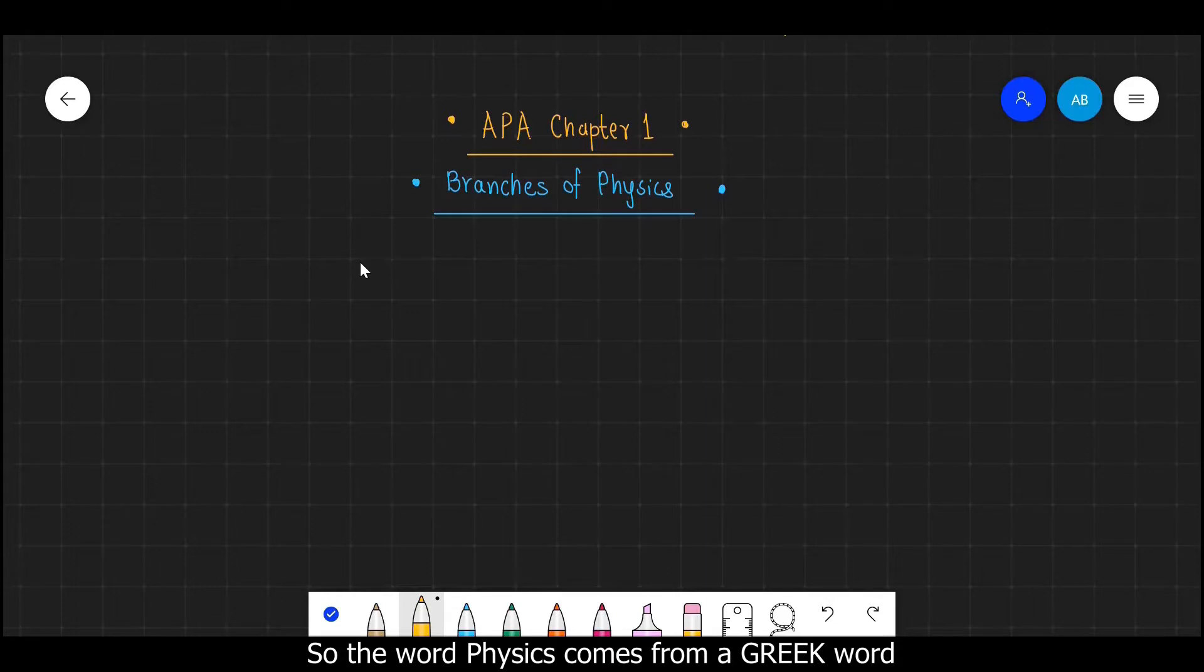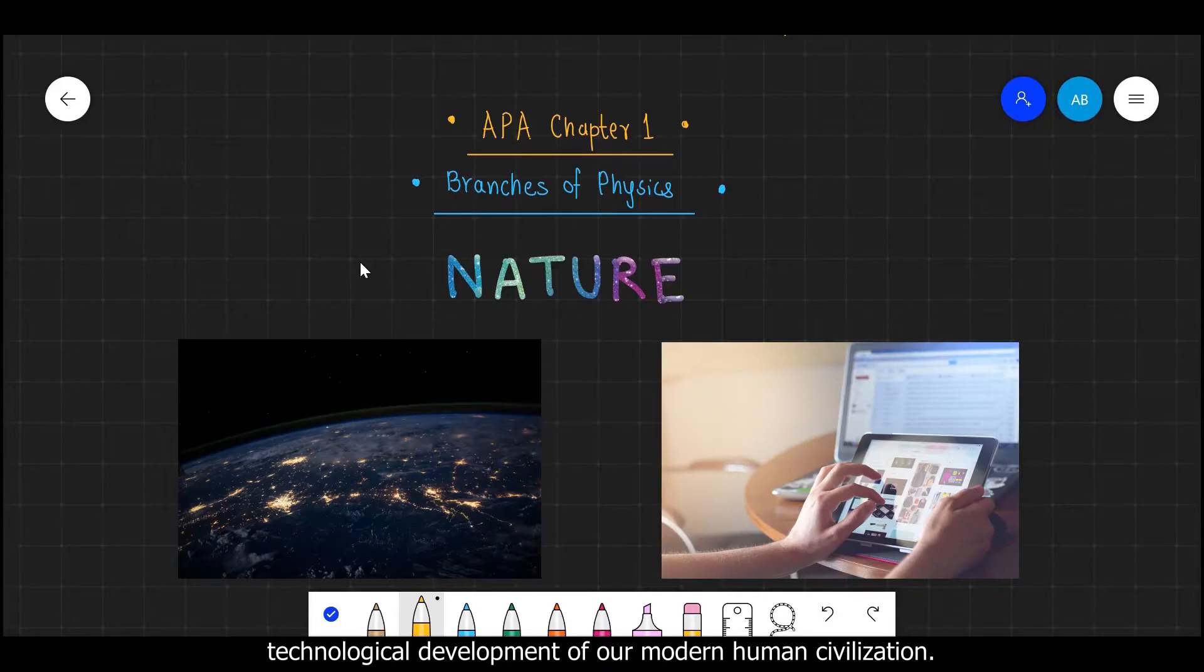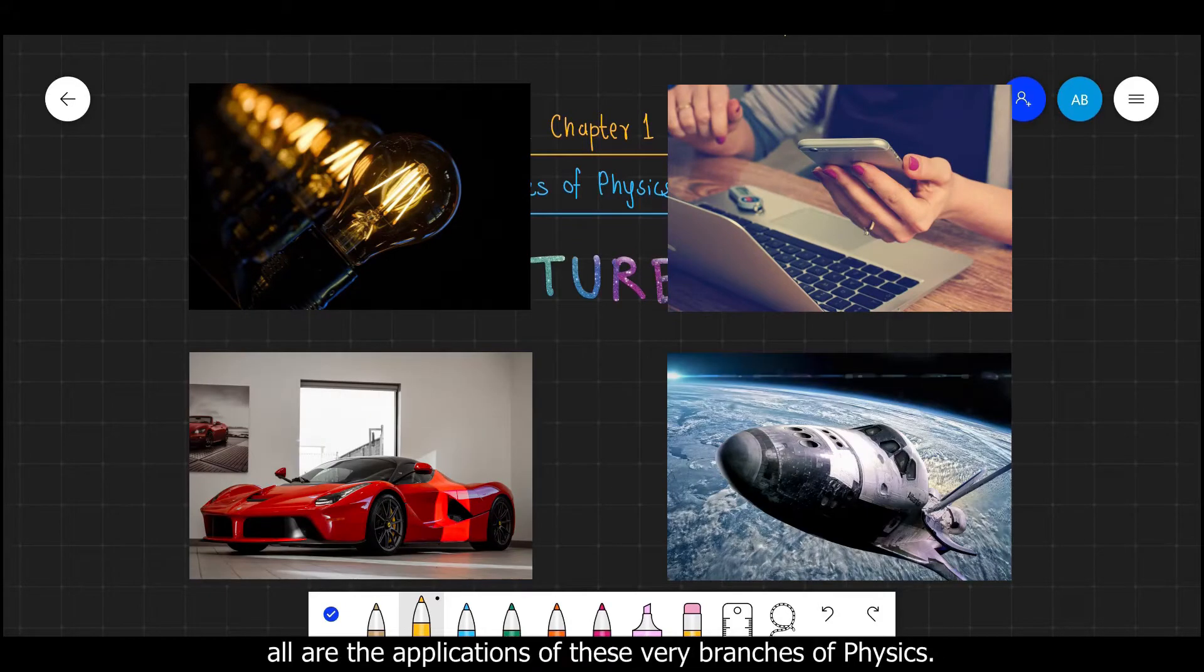The word physics comes from a Greek word which means nature, and indeed physics is all about understanding various phenomena that happens in our nature. It has played the most important role in the technological development of our modern human civilization. From electricity to mobile phones, from cars to rockets, all are applications of these very branches of physics.